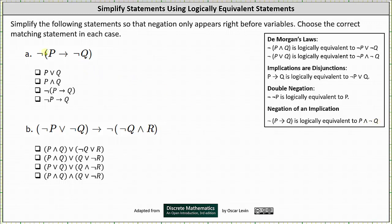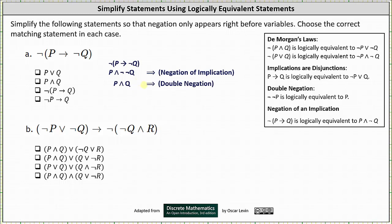This indicates the negation of the implication 'if p then not q' is logically equivalent to p and the double negation of q. From here we can simplify the double negation of q. The double negation of q is logically equivalent to q, giving us the simplified statement of p and q, which we can see is the second choice.